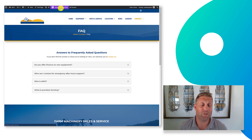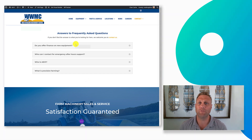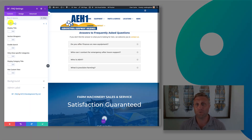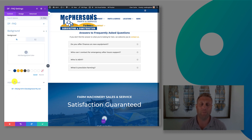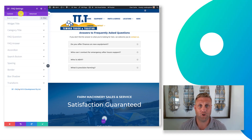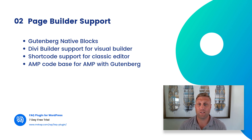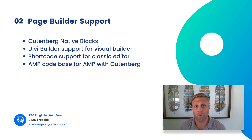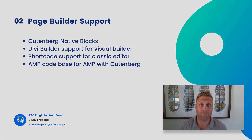We also have Divi Builder support, and that includes the visual edit support for Divi. This gives you all the normal editing tools that you would get for a normal FAQ layout with the benefits of our FAQ plugin. We have shortcodes as well, which are available for those of you using the classic editor. And we have an AMP code base for our Gutenberg blocks, so the blocks should work fine for any AMP usage that you happen to have.